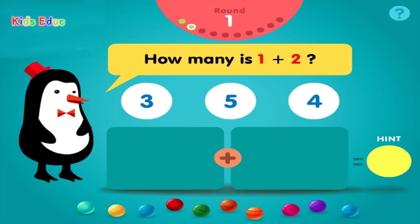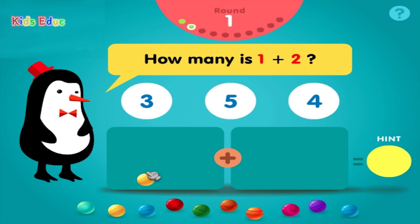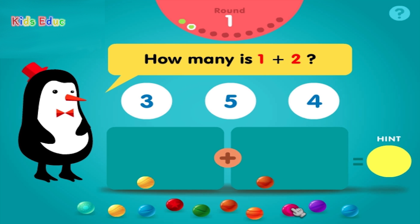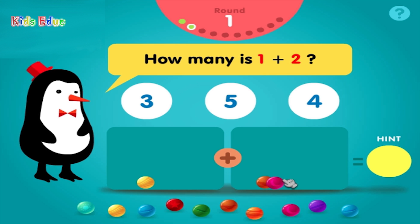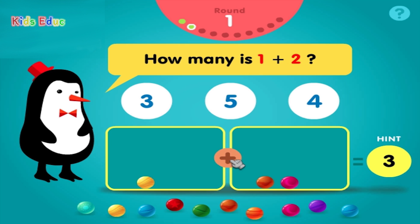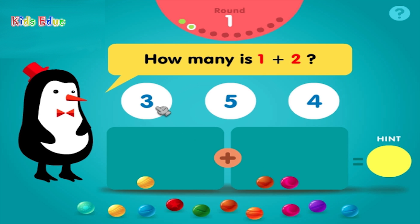How many is 1 plus 2? 1, plus 1, 2, equals 3. Sweet!